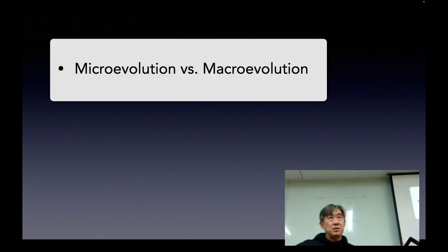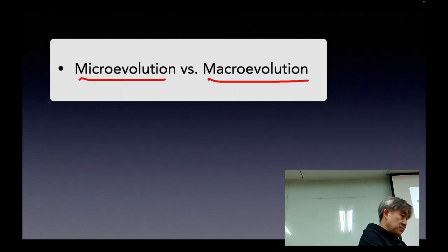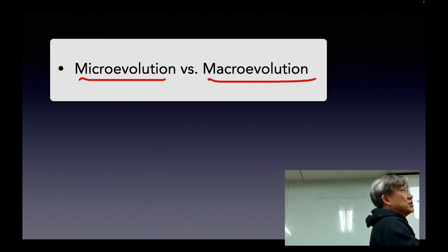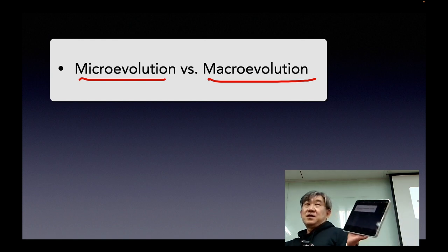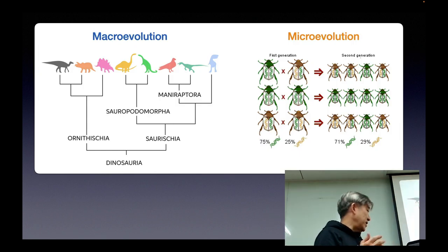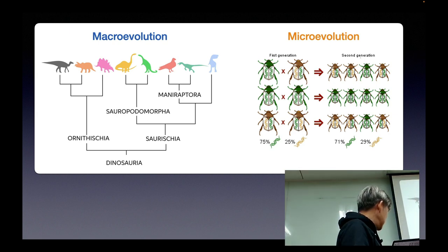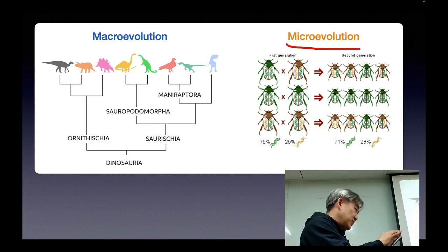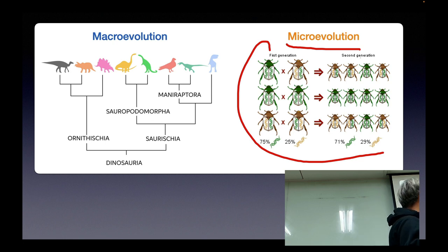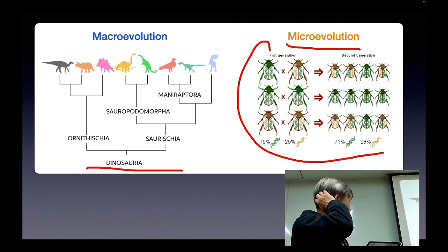So there are two big categories of speciation. One is called microevolution and the other one is macroevolution, both of which you can probably intuitively sense — micro versus macro. So in microevolution, my iPad is still portraying the previous screen while the screen is already ahead. This microevolution here tries to portray some variation like 75%, 25%, 71%, 29%.